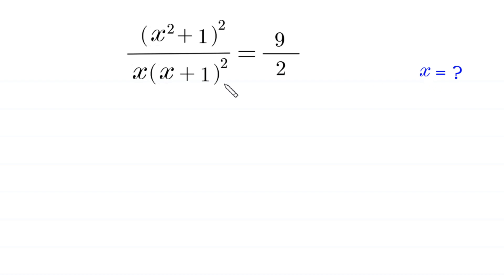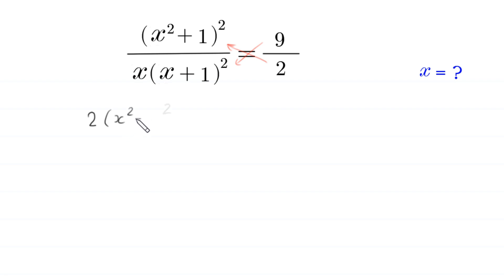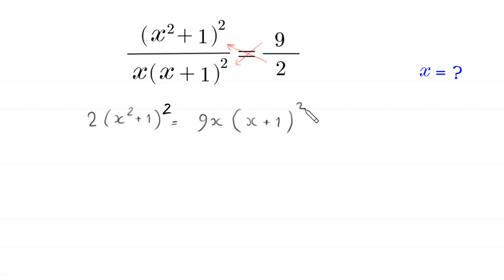We use cross multiplication — we multiply the 9 by the left expression and we multiply the 2 by the right expression. This will become: 2 times (x² + 1)² is equal to 9x times (x + 1)².